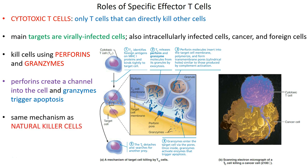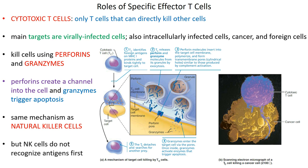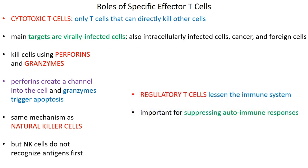Here we see a scanning electron micrograph of a cytotoxic T cell directly bound to a cancerous cell, inserting perforin channels and releasing granzymes so that cancer cell destroys itself. What makes cytotoxic T cells different from natural killer cells is that cytotoxic T cells respond directly to antigens presented to them — a more specific response — whereas natural killer cells don't use an antigen recognition system first. Regulatory T cells dampen down the immune system, suppressing it so that autoimmune responses don't occur.